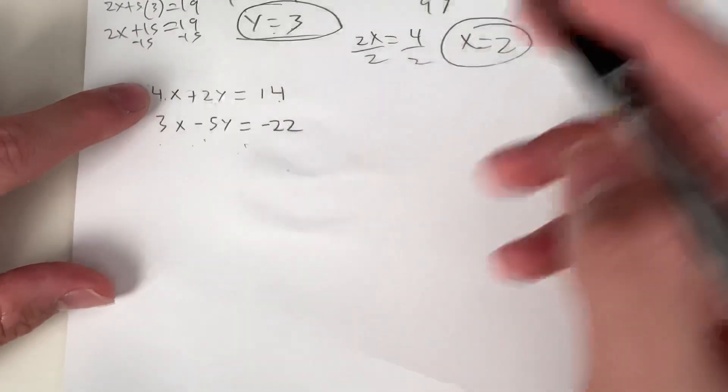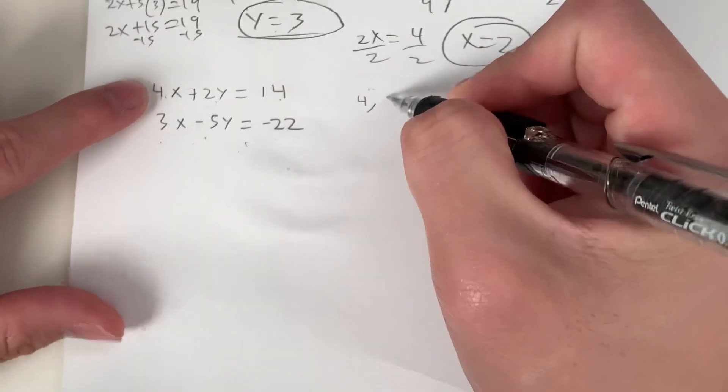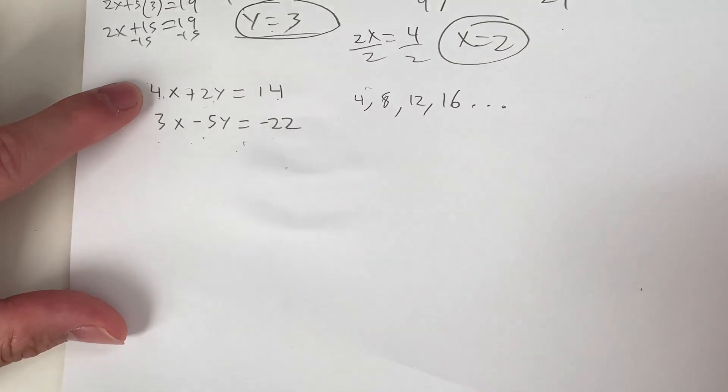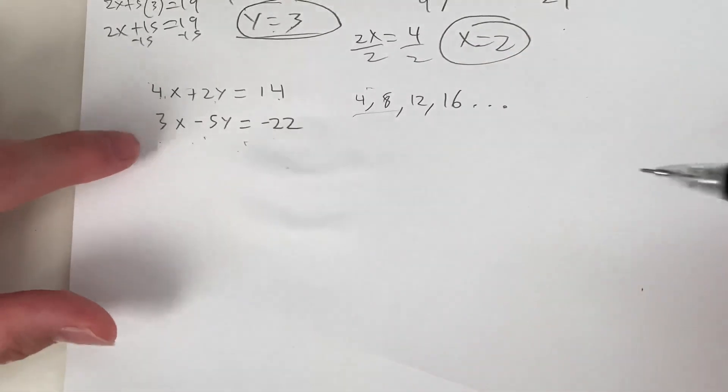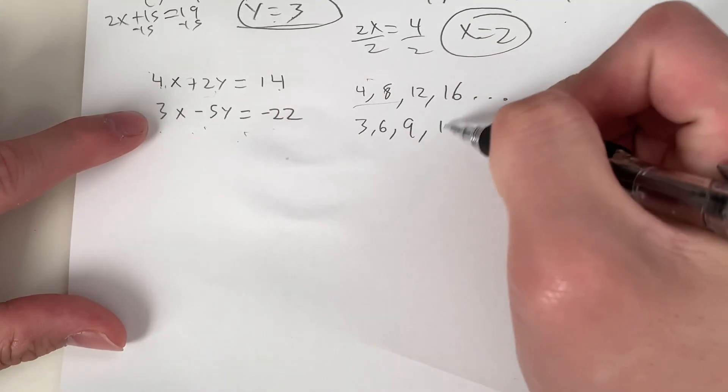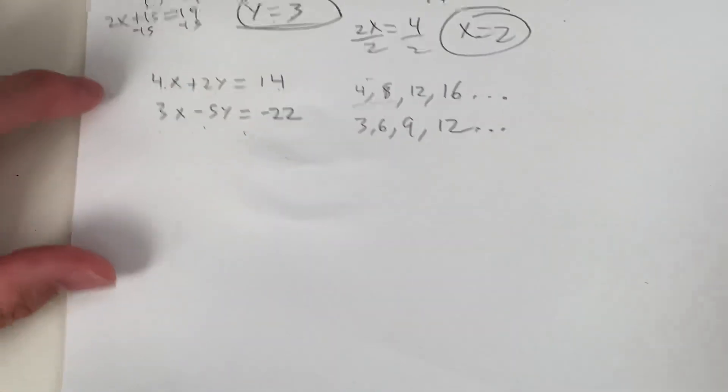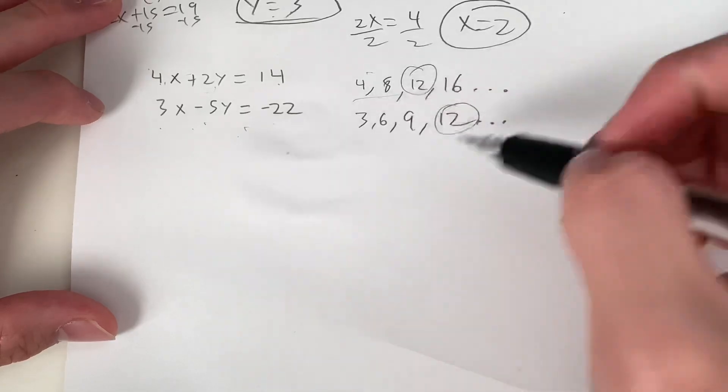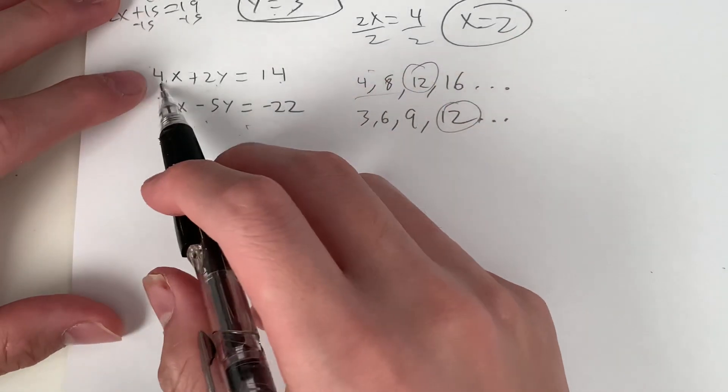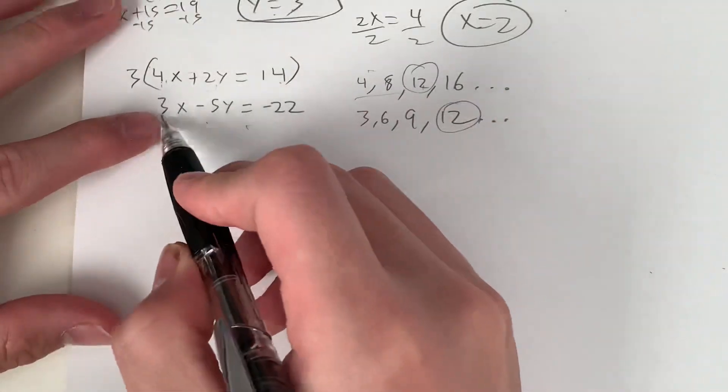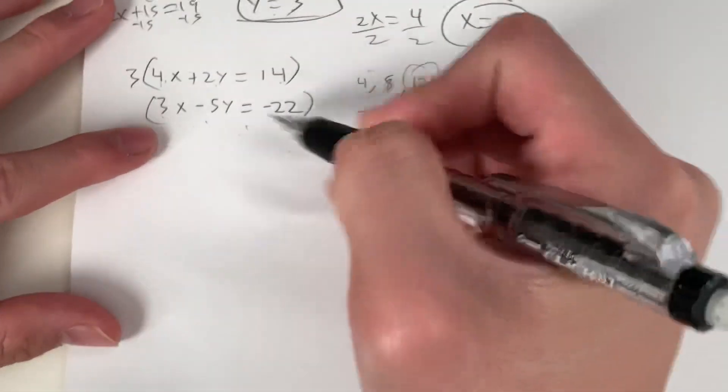So what are some multiples of 4? Let's jot it down. So it's 4, 8, 12, 16. Usually I just list 4, that usually works. How about for 3? It's going to be 3, 6, 9, 12, etc. So what is the least common multiple? It's going to be 12. That's the least common one that they share. So how do we get from 4 to 12? We have to multiply by 3. And how do we get from 3 to 12? We multiply by 4.